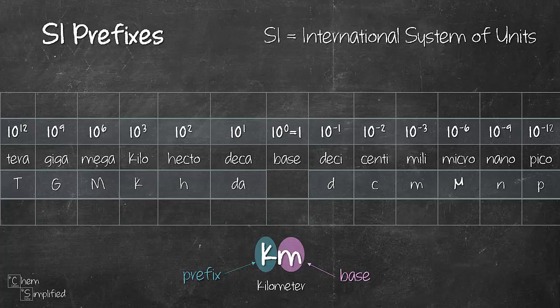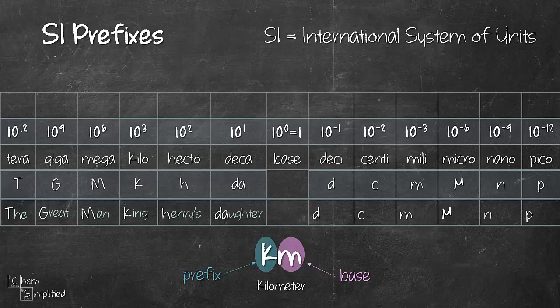To make life easy I came up with a mnemonic to help you remember all the 12 prefixes. That should help you remember the name of the prefixes in the correct order. The great man King Henry's daughter Beth drinks cold milk until 9 p.m.